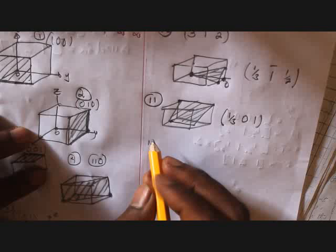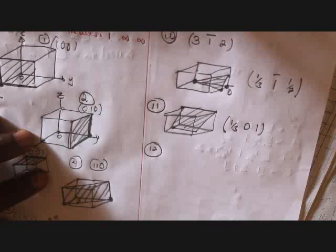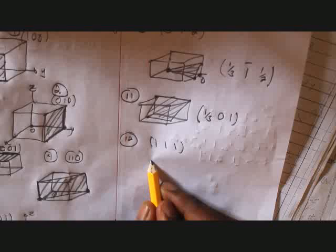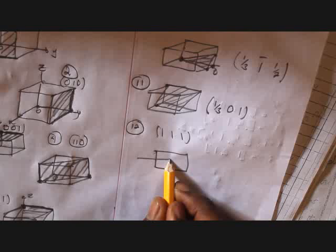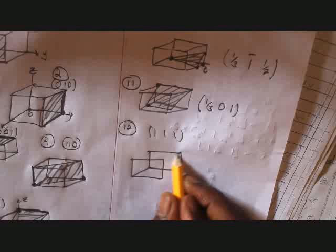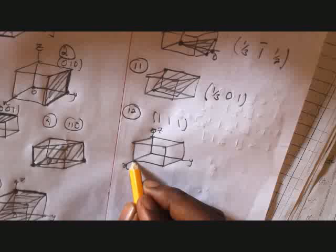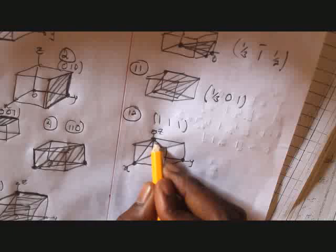For number eleven continued: x is at one-third, put the intercept point there. Let's take this direction — all are positive: x is 1, y is 1, z is 1. Add the intercept points together and the resulting Miller plane direction will be here.